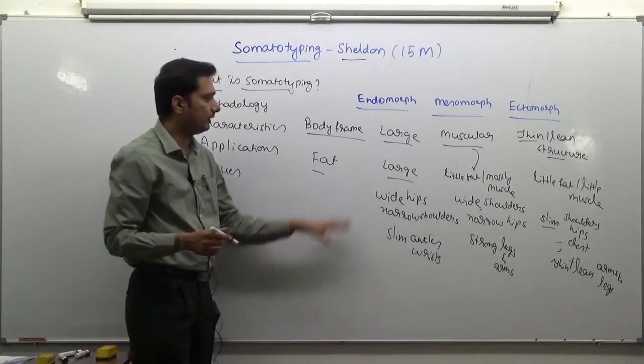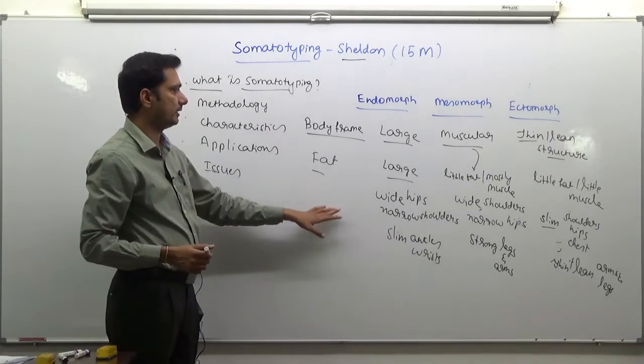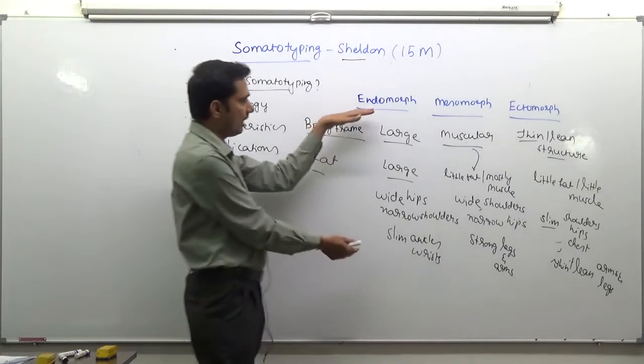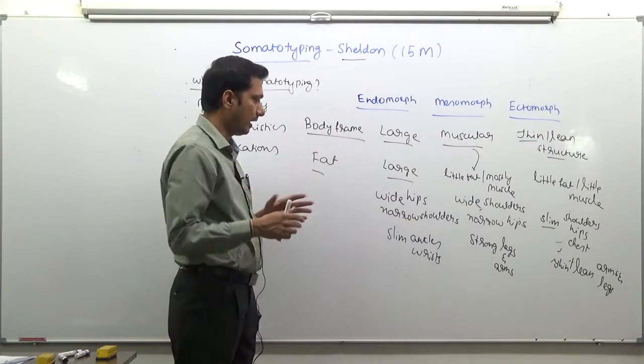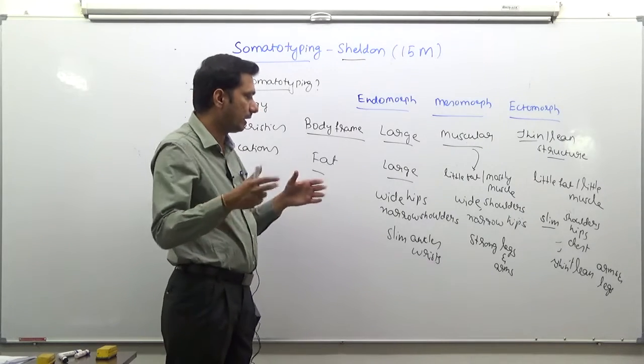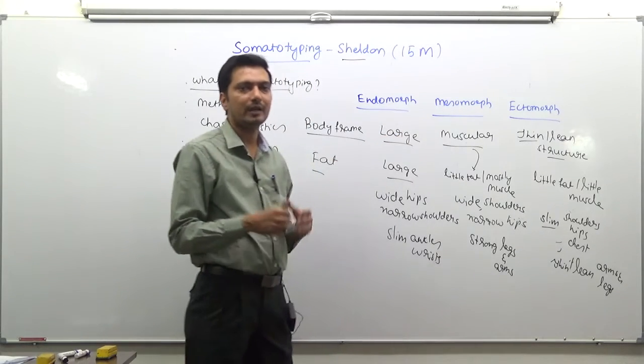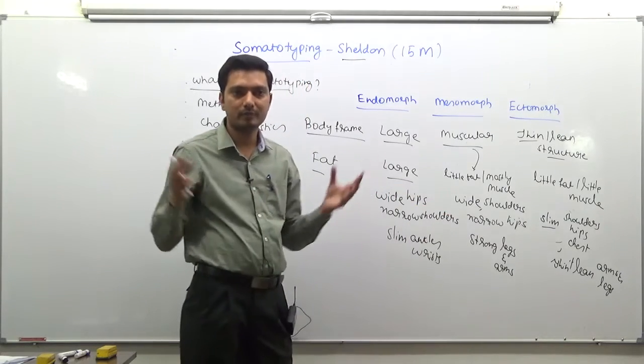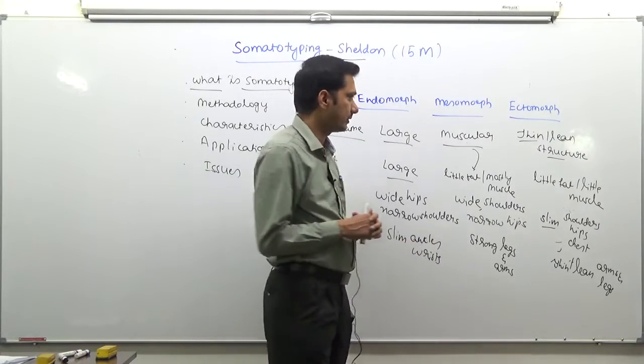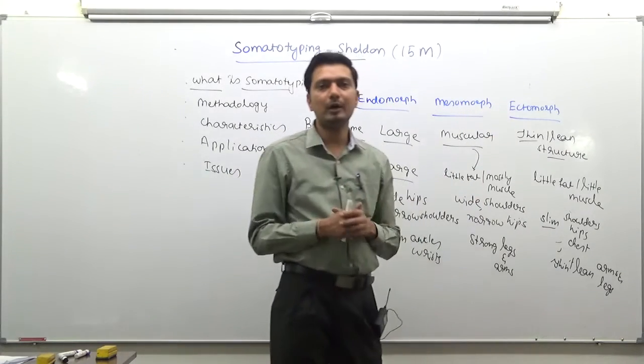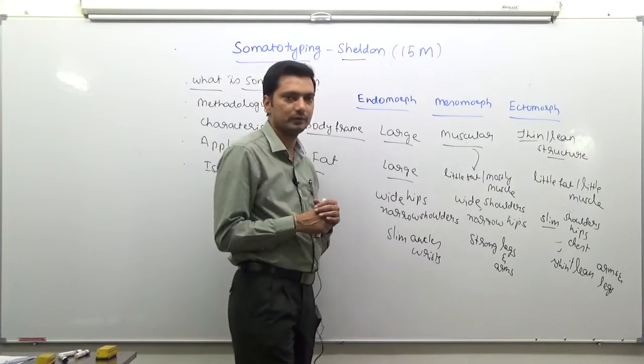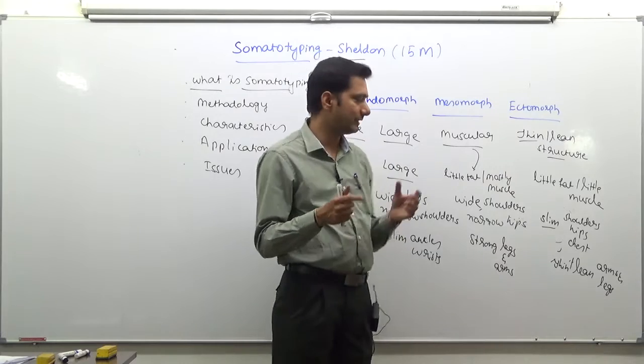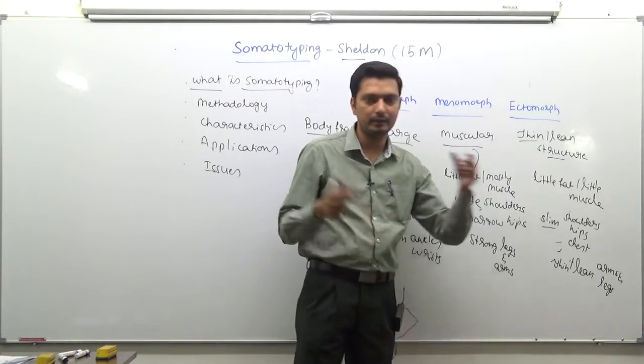In this table, we summarize the characteristics of these three categories. Endomorphs are fat and large with wide hips but narrow shoulders. Mesomorphs have muscular build with little fat and more muscle, wide shoulders but narrow hips, and strong legs and arms. Ectomorphs have overall thin and lean bodies, not much fat or muscle, with slim shoulders, hips, and chest.